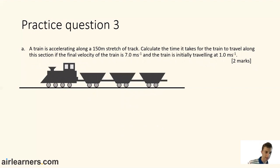Alright, practice question three. A train is accelerating along a 150 metre stretch of track. Calculate the time it takes for the train to travel along this section if the final velocity of the train is 7 metres per second and the train is initially travelling at 1 metre per second. This is two marks, so you get a couple of minutes to do it. Pause the video and come back when you're ready.